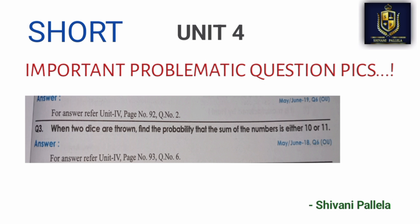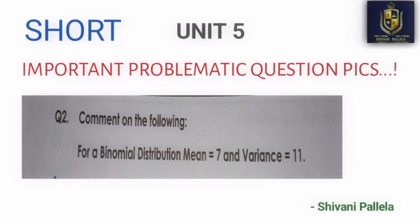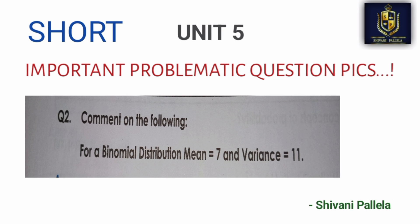In Unit 4, there are probability questions. In Unit 5, for Binomial distribution — mean is equal to 7 and variance is at a certain level. This is the problem format. The same values are repeated here.